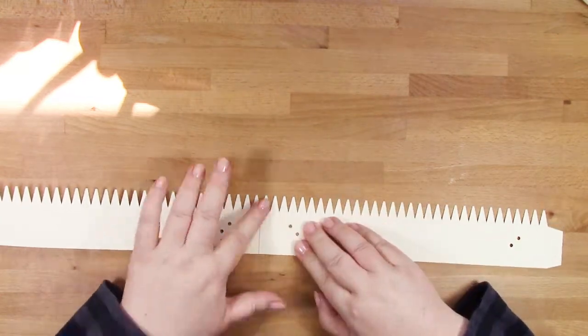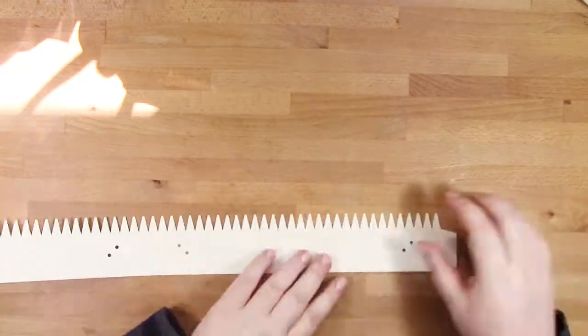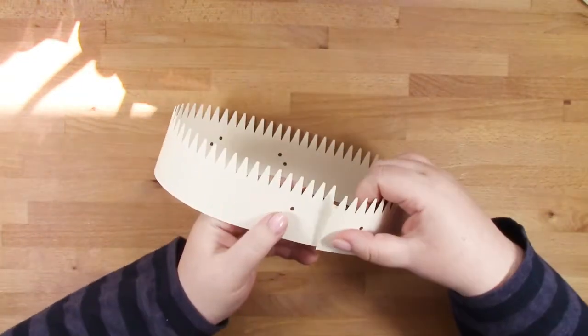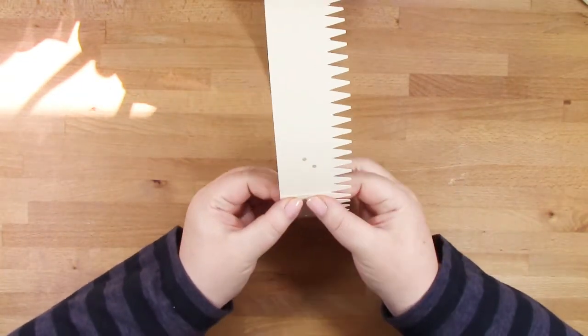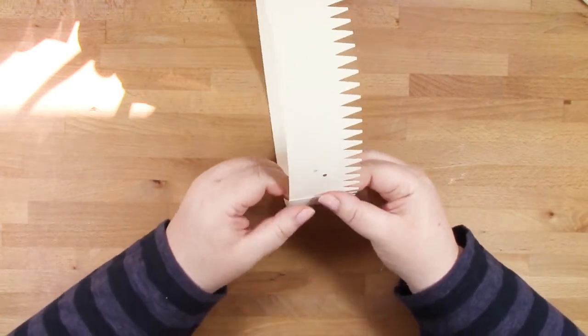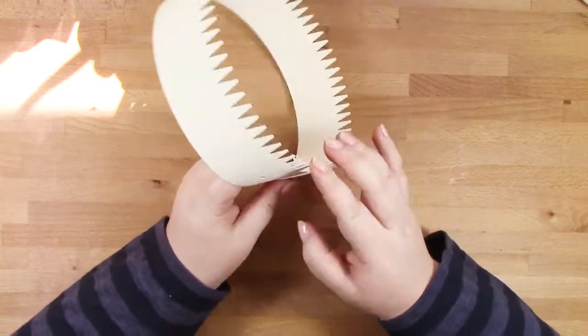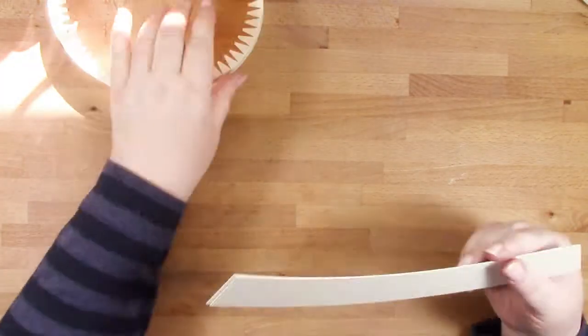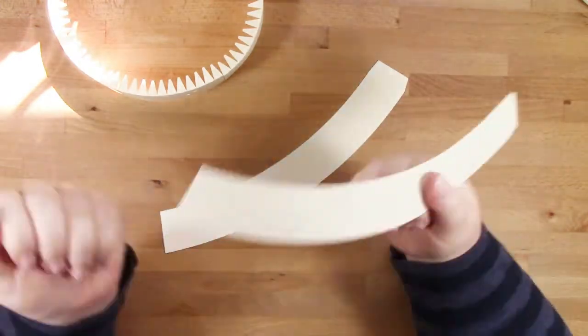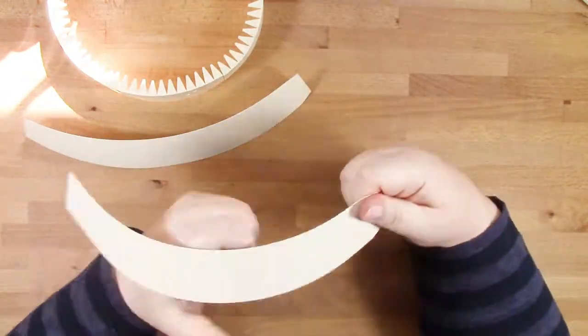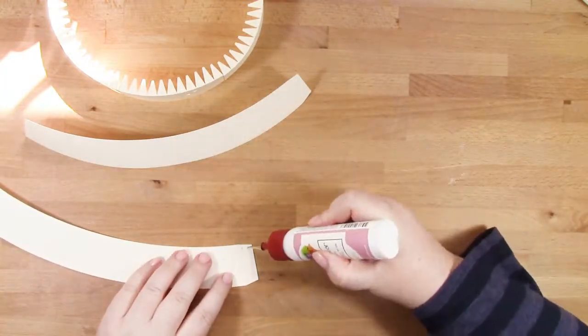I've sped the video up a little bit quicker than usual today because this was quite a long video, but I think you get the gist. I've connected the two pieces together into a circle and now I'm folding over all the teeth. I'm moving on to my next layer, these two pieces that have tabs on the end but don't have any teeth.